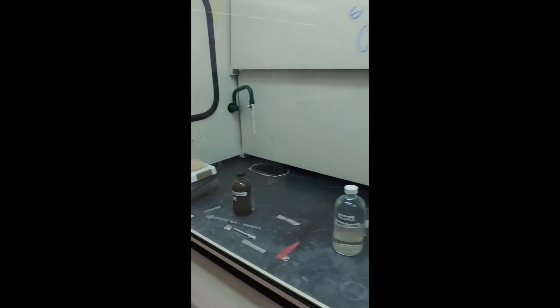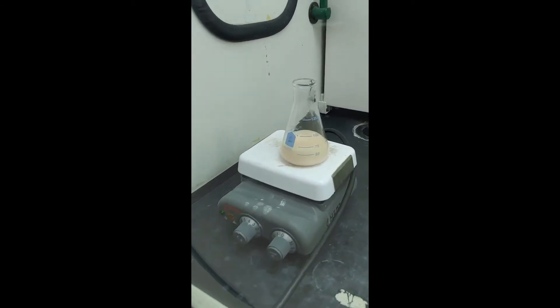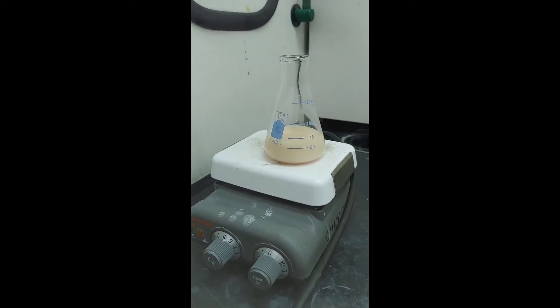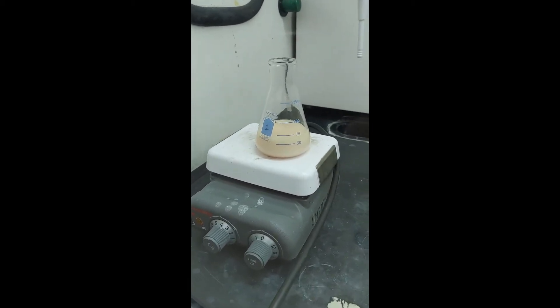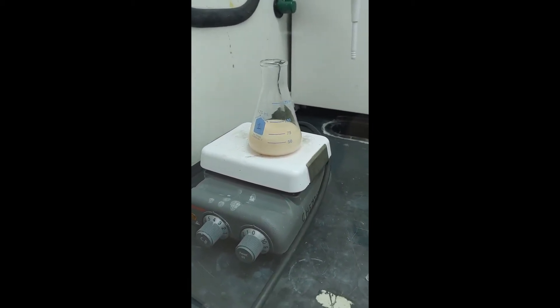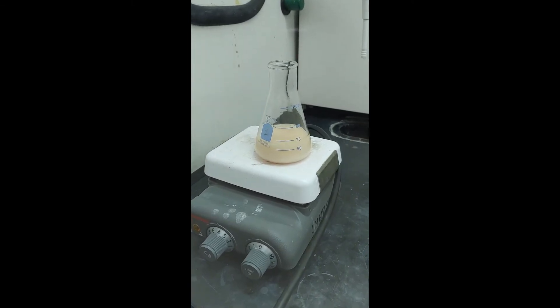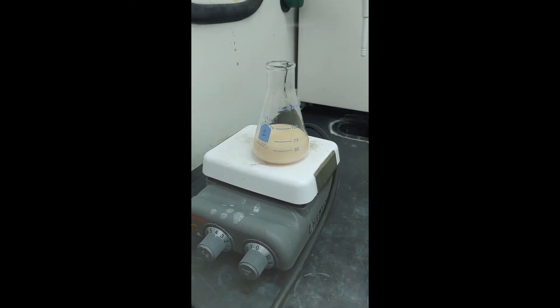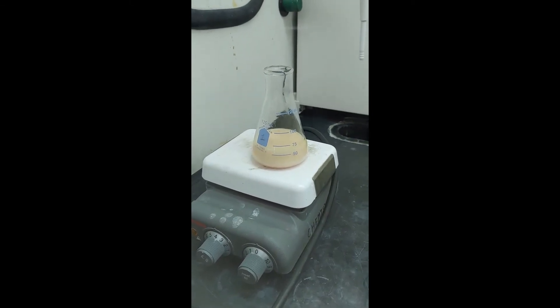Let's go have a look now at our aldol. Oh my goodness. It is now kind of this peach color and it is quite turbid. So we're going to just go ahead and let this stir for another about, I don't know, 13 minutes or so. And then we'll take a look at what it looks like.